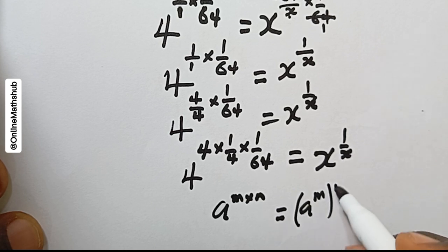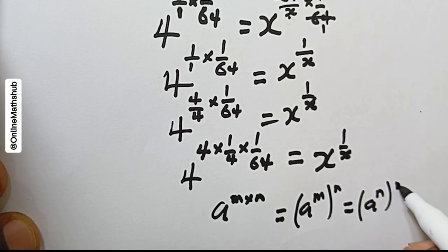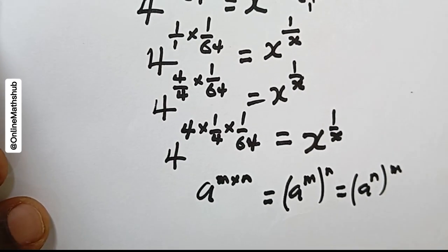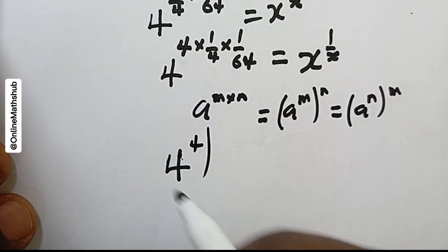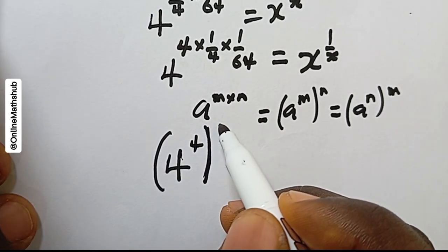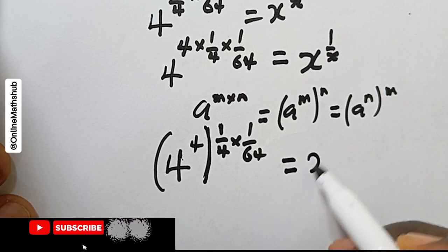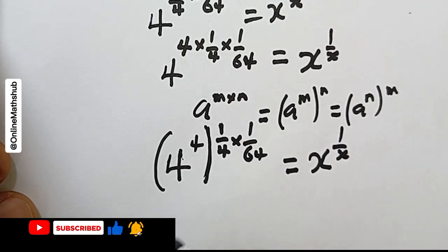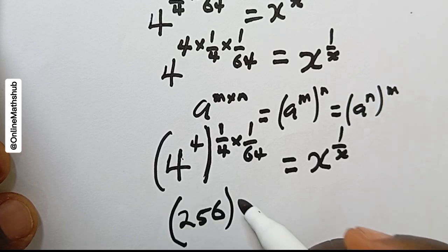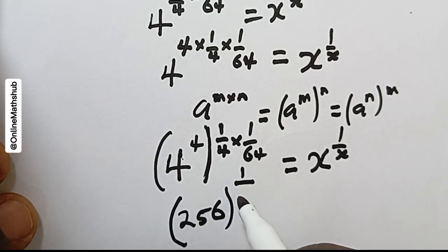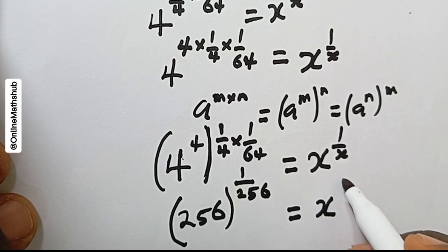Using that exponential law, I rewrite the left side as 4^4 raised to the power of (1/4 × 1/64). Now I evaluate 4^4, which gives us 256, raised to the power of 1 — since 1/4 times 1/64 ... and 4 times 64 gives 256. So the left side becomes 256^(1/256), and this equals x^(1/x).